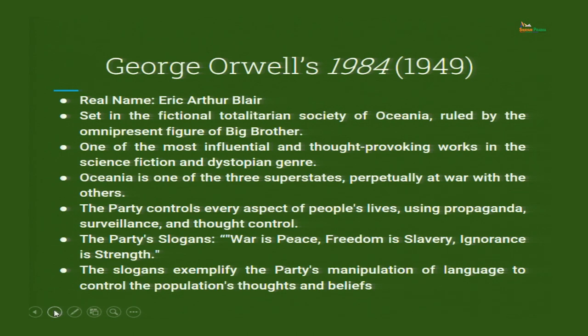Now we will quickly go through George Orwell's 1984. The name of the novel is 1984 and it was published in 1949. The real name of George Orwell is Eric Arthur Blair. He was born in Motihari, Bihar, India, to English parents because India was then under the colonial rule of the British Empire. He went to England with his parents at a very small age and lived there.